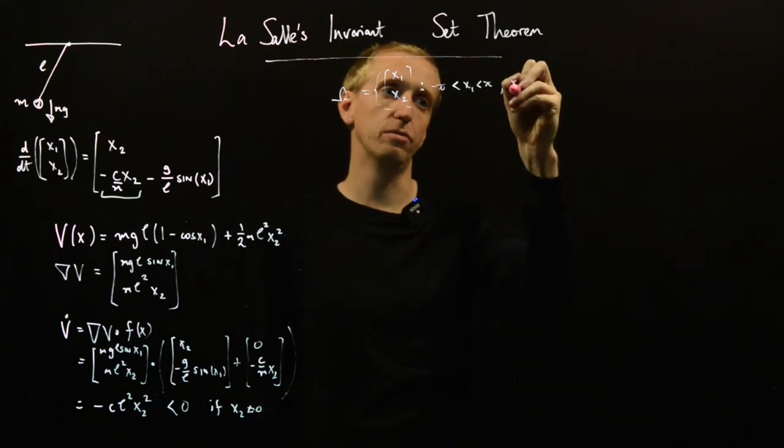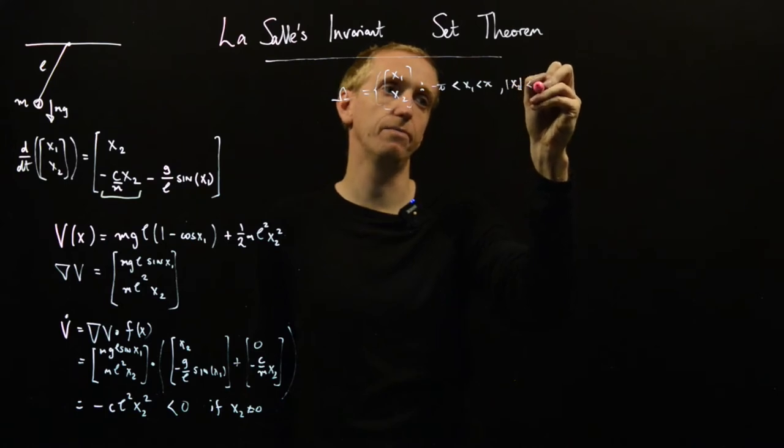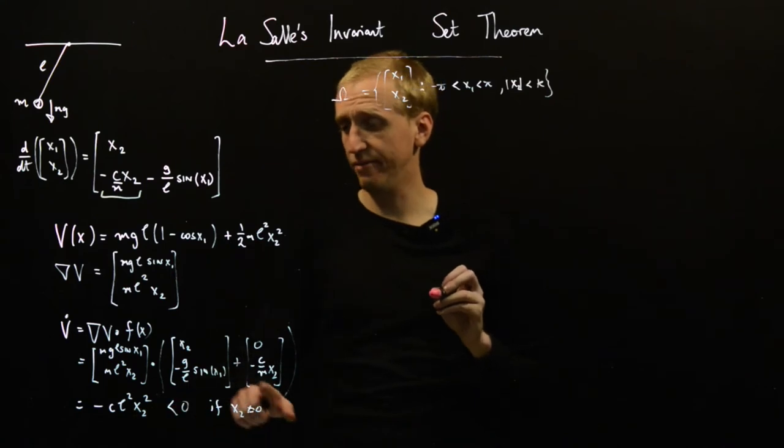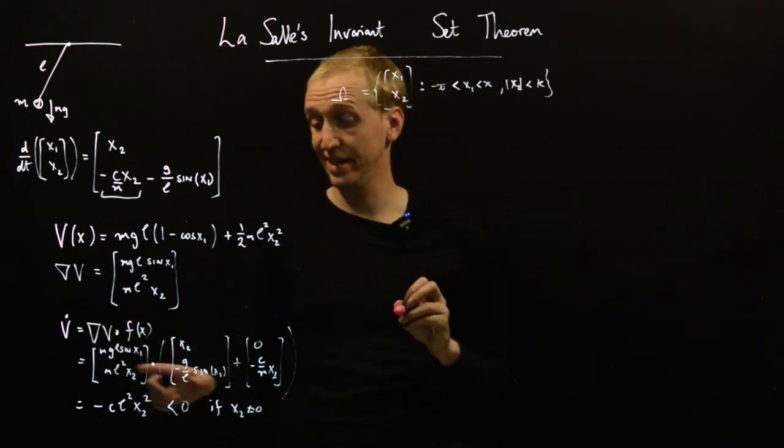And then we said x2, the size of x2, was just bounded. And so now you see the problem we have here is that V dot is less than or equal to zero for every point of omega.